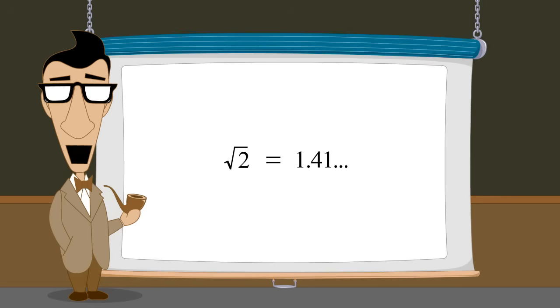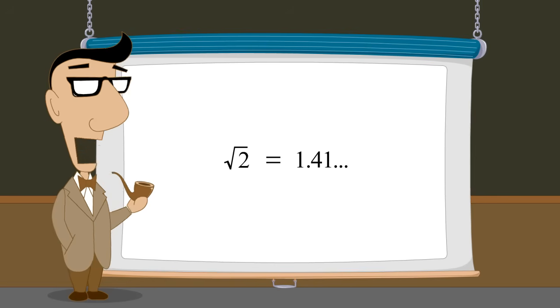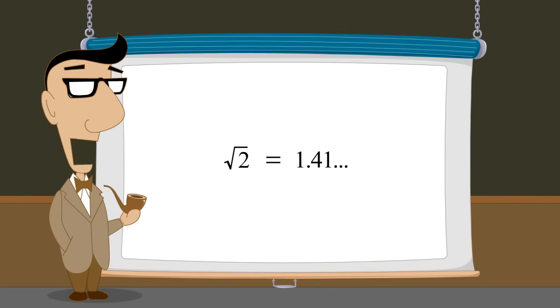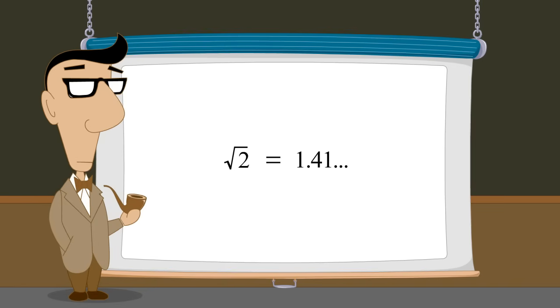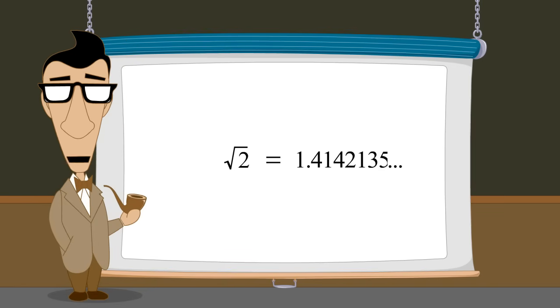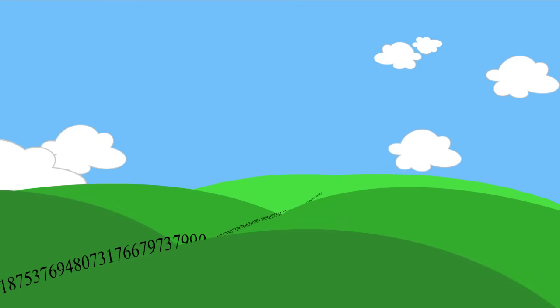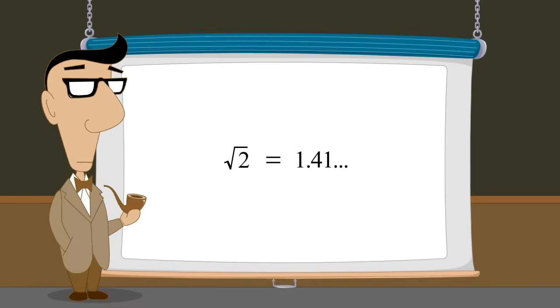However, when we try and represent an irrational number as a decimal number, we find that the number will always contain an infinite sequence of non-repeating digits. No matter how many digits we write after the decimal point, the digits will never repeat. Therefore, we can never perfectly represent an irrational number either as a decimal number or as a fraction.